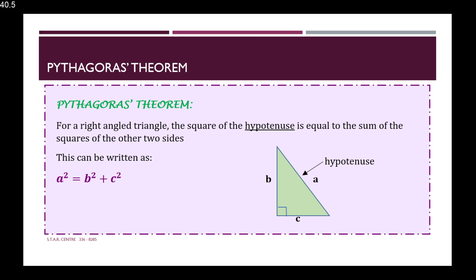Pythagoras's theorem states that for a right-angled triangle, the square of the hypotenuse is equal to the sum of the squares of the other two sides. The side that is opposite the right angle is called the hypotenuse. So if we square this side, that is equal to if we square the other two sides and add them, giving us the formula A squared equals B squared plus C squared.